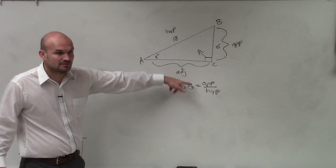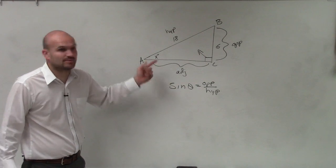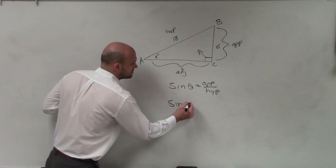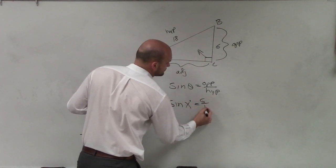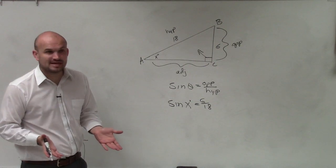Do we know the angle? Well, it's x, right? We know what it is, but we don't know the value. So we say sine of x is equal to 6 over 18. Now, 6 over 18, ladies and gentlemen, we can reduce that to 1/3, right?